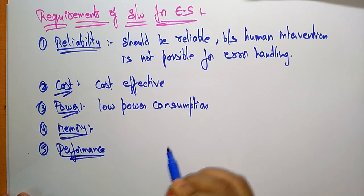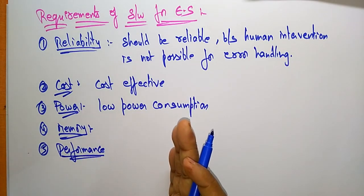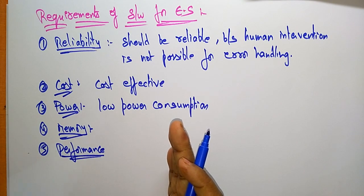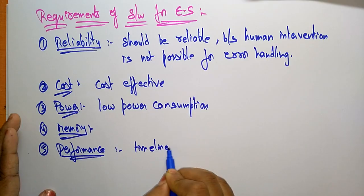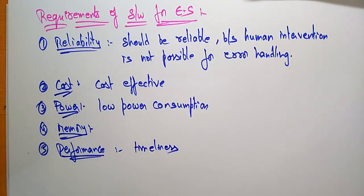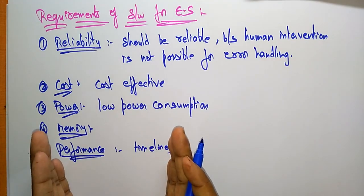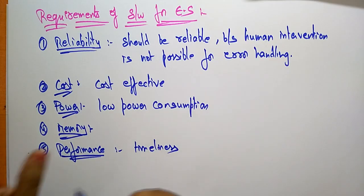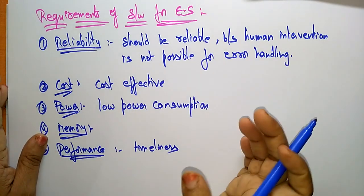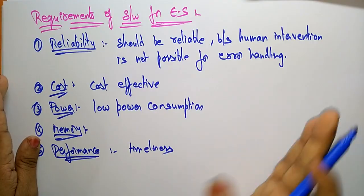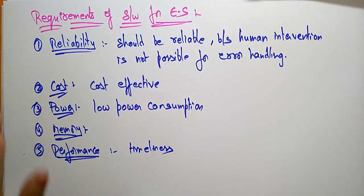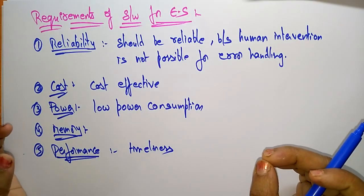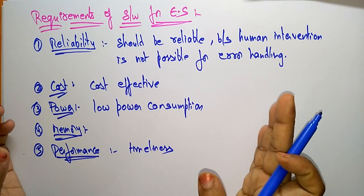The next requirement is performance. The performance requirement is the most important requirement, and that is the timeline. You have to think about the timeline. These are the different requirements of software for embedded systems. Embedded systems are usually written in non-volatile memory — meaning they are stored in ROM or EEPROM, which cannot be easily modified. So they are permanent, designed while the chip is being designed, and cannot be easily modified.